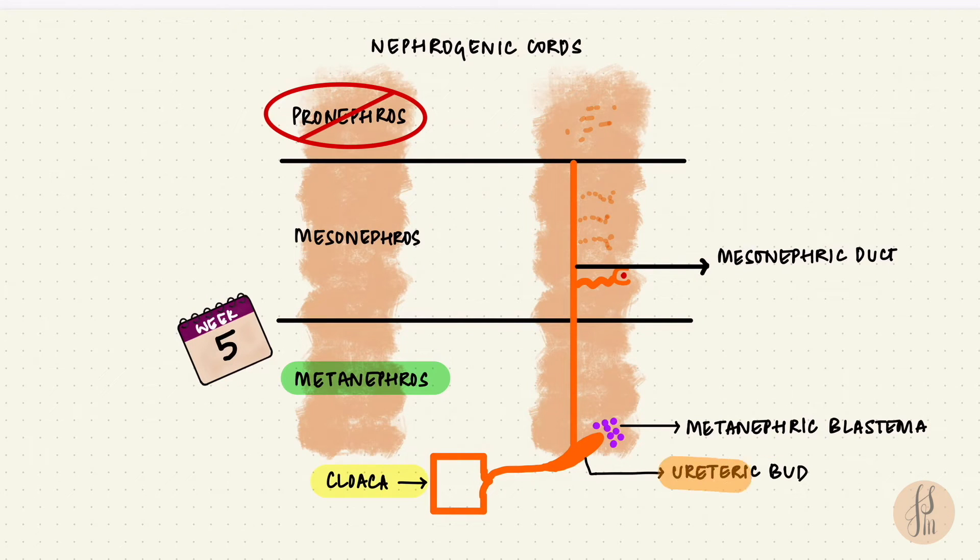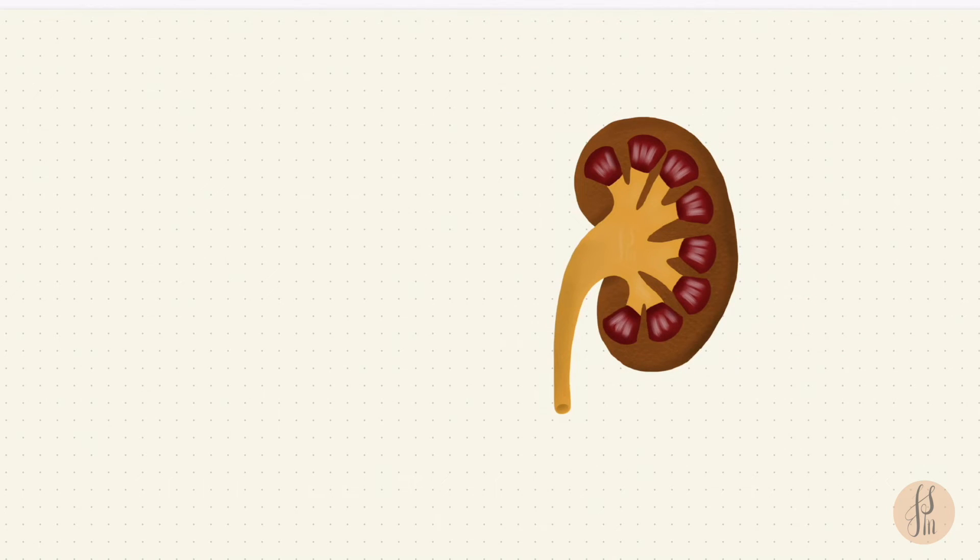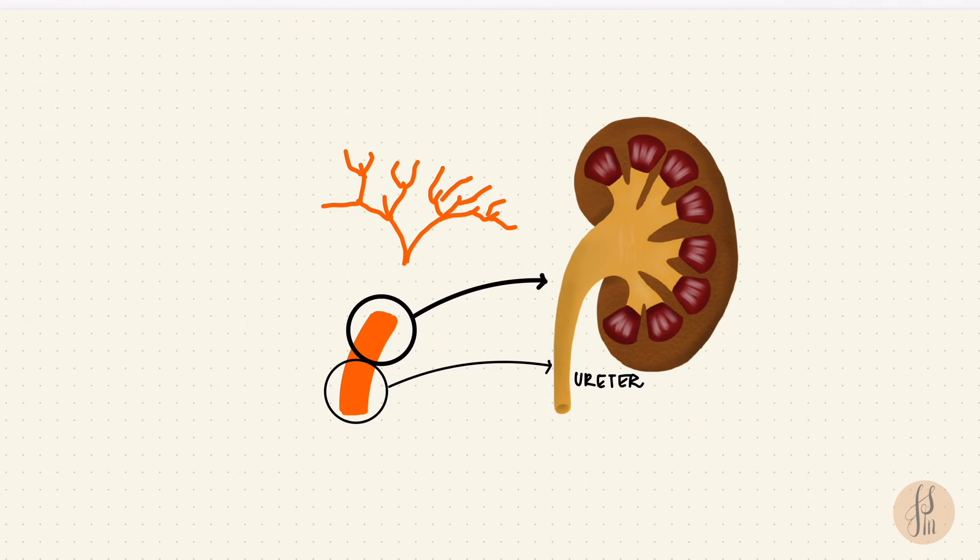First let's look at the ureteric bud. The caudal part of the bud, that's going to form the ureter. So that leaves the cranial part to form the rest. So it branches and forms those collecting tubules. The first few set of branches will form the major calyces, and the next set will form the minor calyces. So we're done with the collecting system. We've got the calyces, the pelvis, and the ureter.